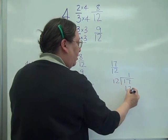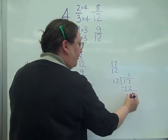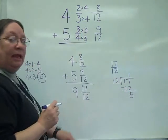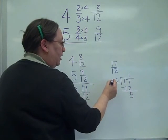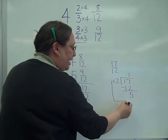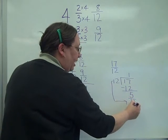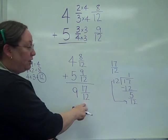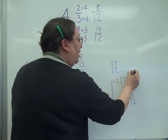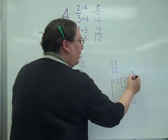1 times 12 is 12. Subtract, you've got 5 left over. Okay, in a fraction problem, this becomes the top of the fraction. The 12 comes down and is still the denominator. In other words, the denominator is not going to change. So what I actually have here is 1 and 5 twelfths.